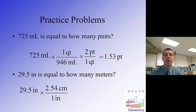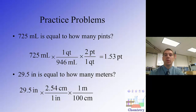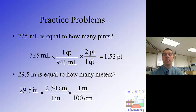Meters is the base unit (10 to the zero power), and centi is 10 to the minus 2, so there are 100 centimeters in every 1 meter. Setting up the conversion so centimeters are on the bottom and 1 meter is on top, we do the math: 29.5 times 2.54, divided by 100. Conversion factors are exact values and not considered for sig fig purposes — so with three sig figs from the original measurement, the answer is 0.749 meters.